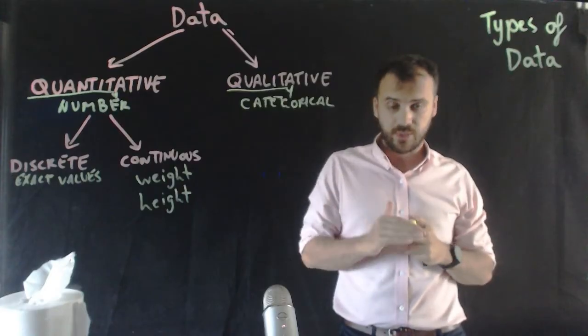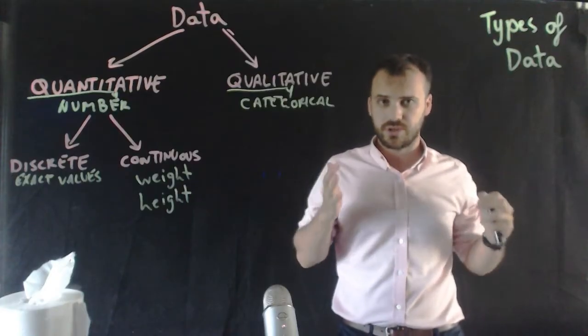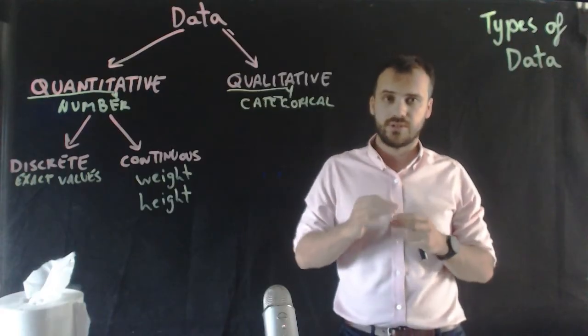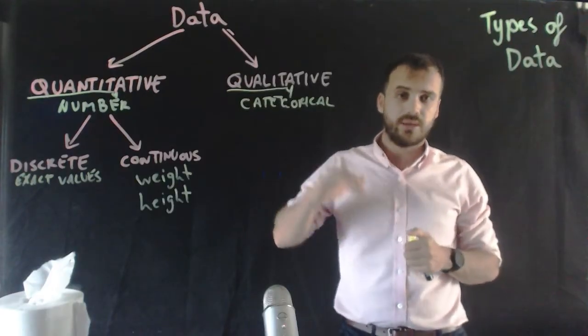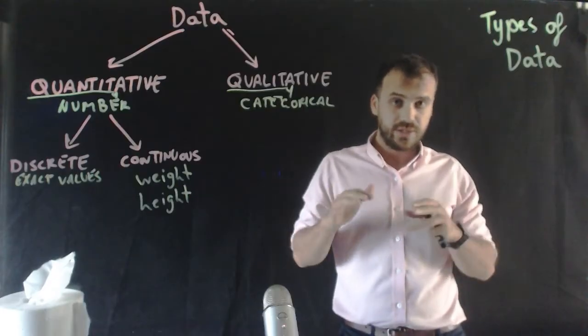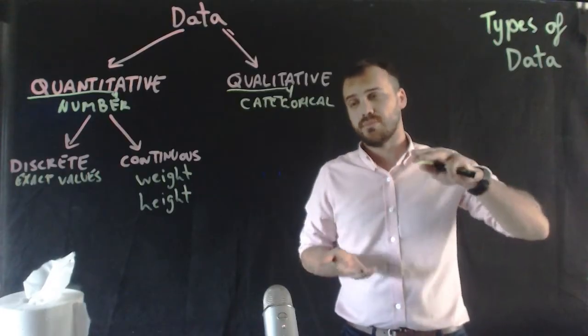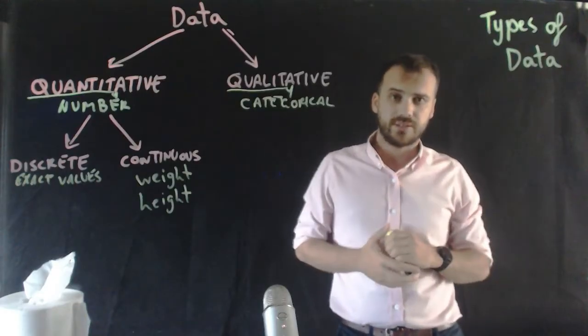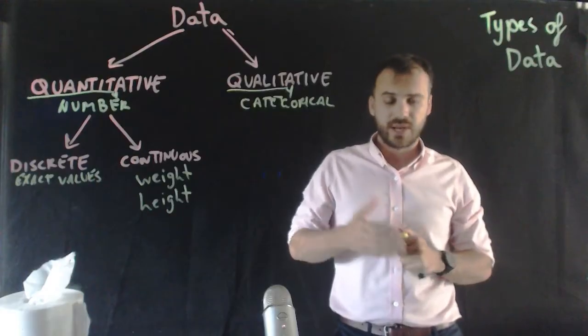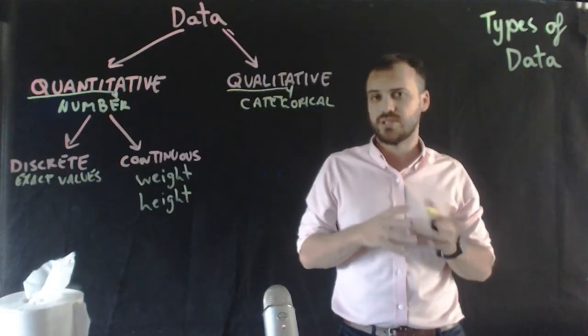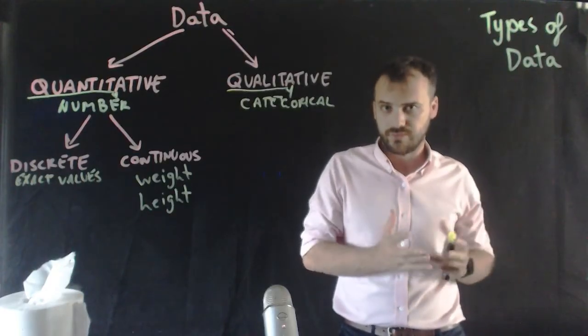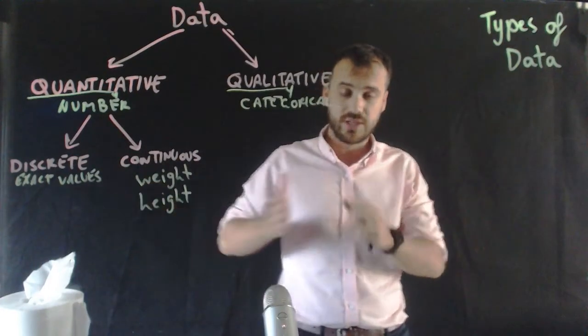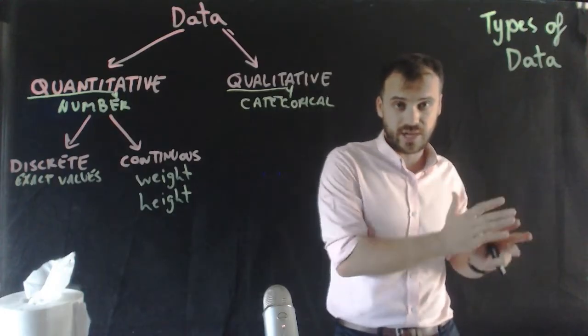You were 1 meter tall at some point, and then you were 1.000000001, and then you were 1.00002, all the way up to whatever height you are currently. Crazily, you've actually been an infinite number of heights all the way up to it. Same with your weight. You might think you're about 75 kilos, but actually you're probably 75.2765986234. So continuous can take absolutely any value, whereas discrete are only exact values.